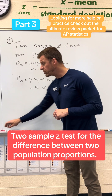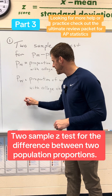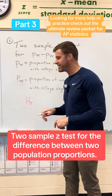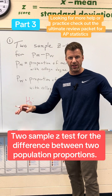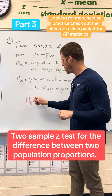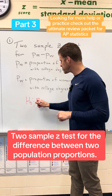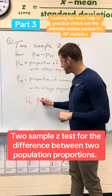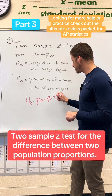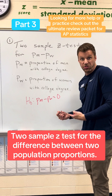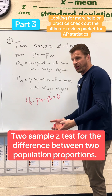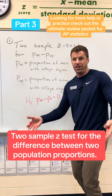What we also need in step one is our hypotheses. The null hypothesis is that there is no difference — we assume there is absolutely no difference — and we can write that two ways. If there's no difference, we could say that the proportion of men minus the proportion of women equals zero, because no difference means zero.